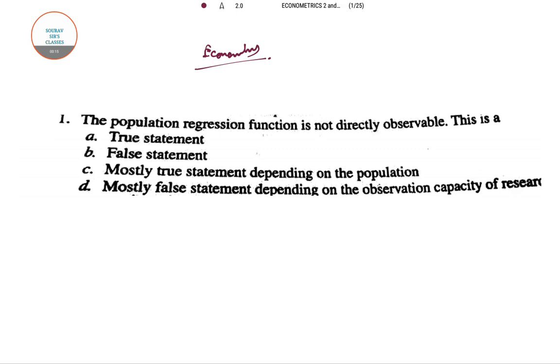The first question here is a population regression. They have given a population regression function. This is not directly observable. The population regression function is not directly observable. This one is a true or false or correct statement.